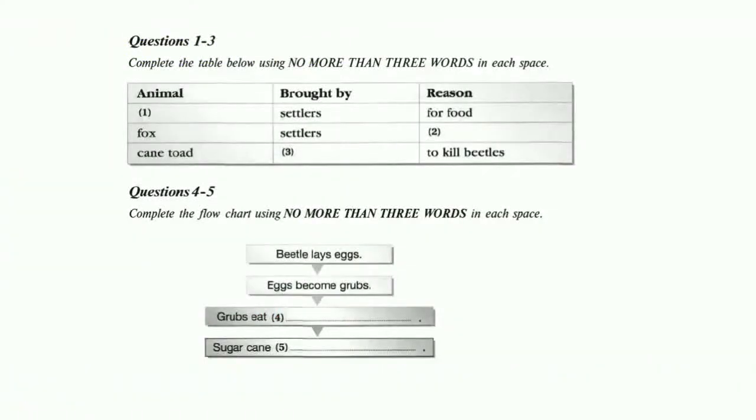You're going to hear a number of different recordings and you'll have to answer questions on what you hear. There'll be time for you to read the instructions and questions and you'll have a chance to check your work. All the recordings will be played once only. The test is in four sections. At the end of the test you'll be given ten minutes to transfer your answers to an answer sheet. Now turn to section one.